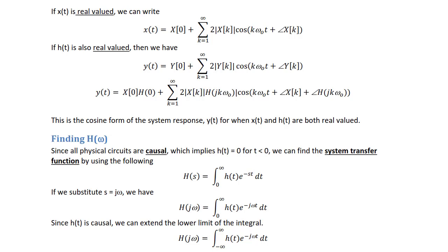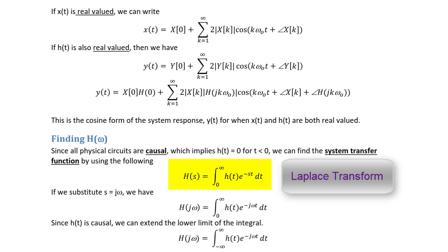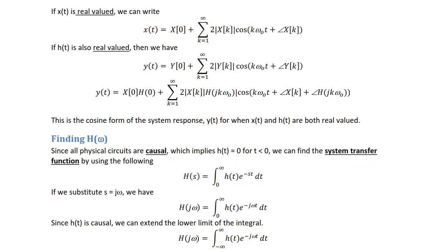This should look similar to what we did during phasor analysis and examples earlier in this course. Finding h(jω): since all physical circuits are causal, which implies h(t) equals 0 for t less than 0, we can find the system transfer function using h(s) equals the integral from 0 to infinity of h(t) times e to the minus st dt. This is the Laplace transform. If we substitute s equals jω, we get h(jω) equals the integral from 0 to infinity of h(t) times e to the minus jωt dt. Since h(t) is causal, we can extend the lower limit so that h(jω) equals the integral from negative infinity to infinity of h(t) times e to the minus jωt dt.